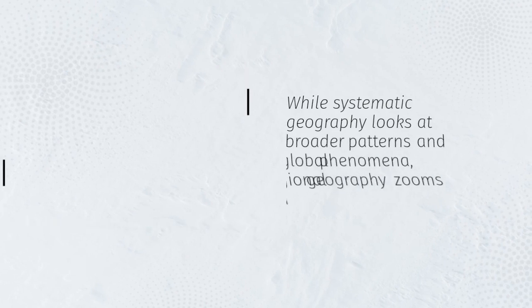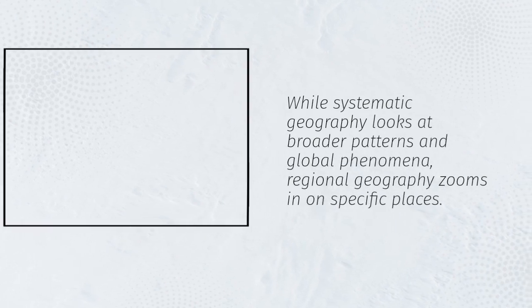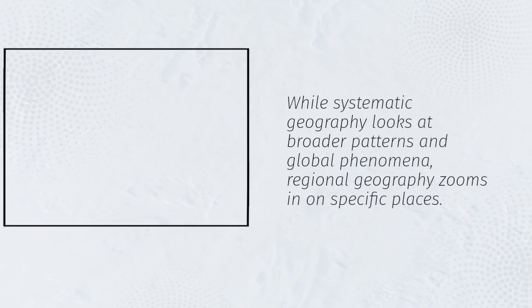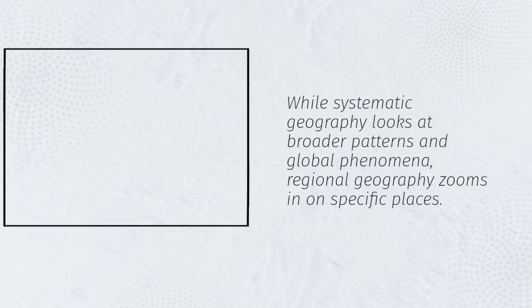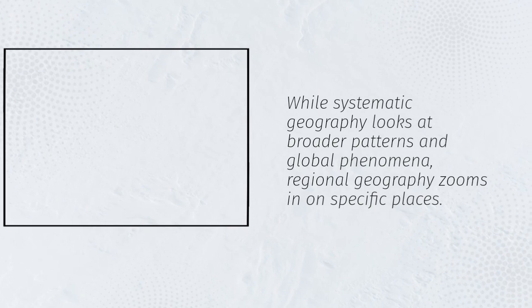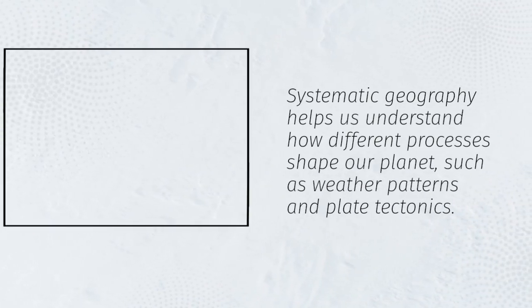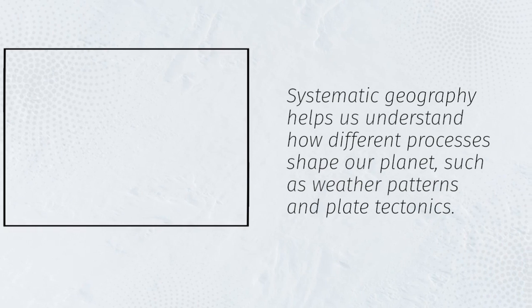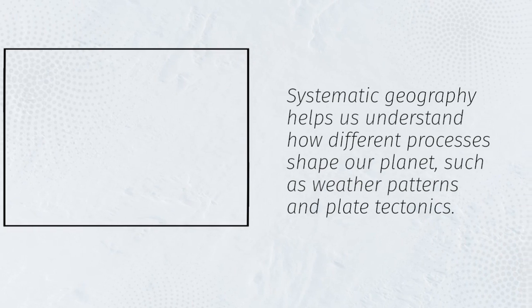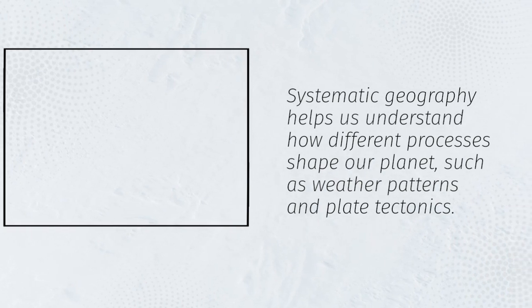While systematic geography looks at broader patterns in global phenomena, regional geography zooms in on specific places. Systematic geography helps us understand how different processes shape our planet, such as weather patterns and plate tectonics.